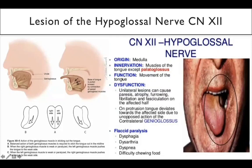With flaccid paralysis, the tongue deviates to the side of the lesion. In the example shown, the tongue deviates to the right side of the patient, with wrinkling visible on the right — indicating a right-side hypoglossal nerve injury. Consequences include dysphasia, dysarthria, dyspnea, and difficulty chewing food.